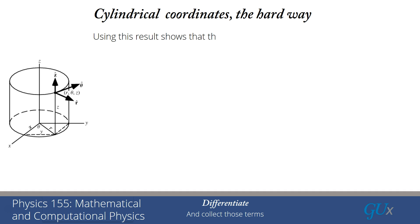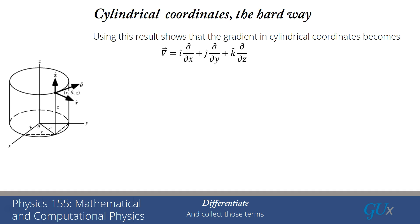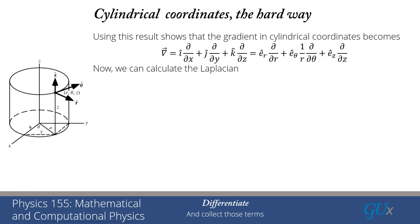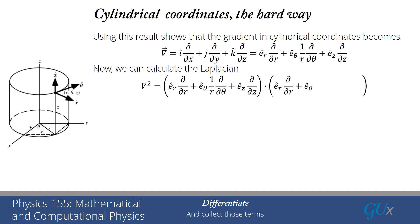To summarize: in Cartesian coordinates the gradient is i-hat d/dx plus j-hat d/dy plus k-hat d/dz. In cylindrical coordinates we write it as e_r d/dr plus e_theta (1/r) d/d_theta plus e_z d/dz. Now we have to determine the Laplacian, which is del dot del. We take the gradient and dot it into the gradient, being careful that all derivatives hit the appropriate places. Since unit vectors only depend on theta, d/dr and d/dz don't affect the unit vectors. The dot product pairs r with r, theta with theta, and z with z.